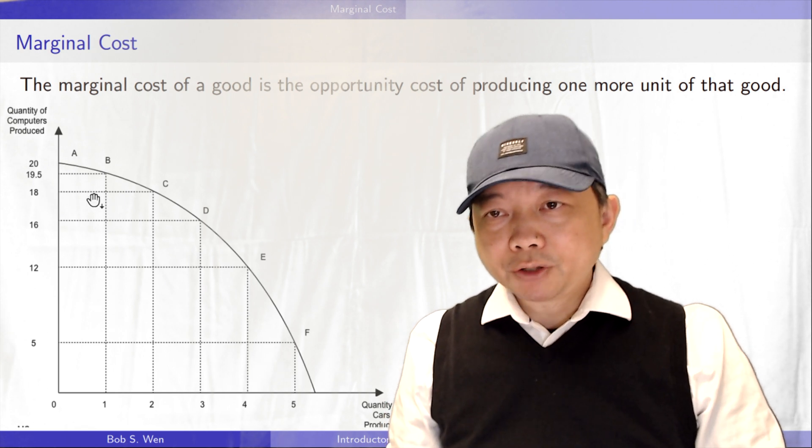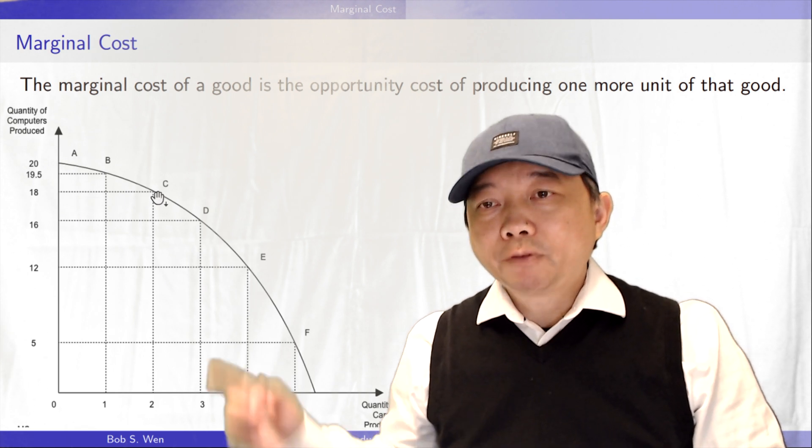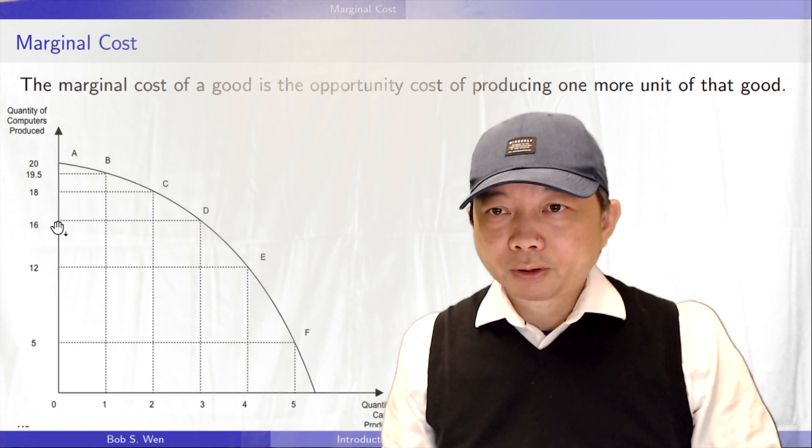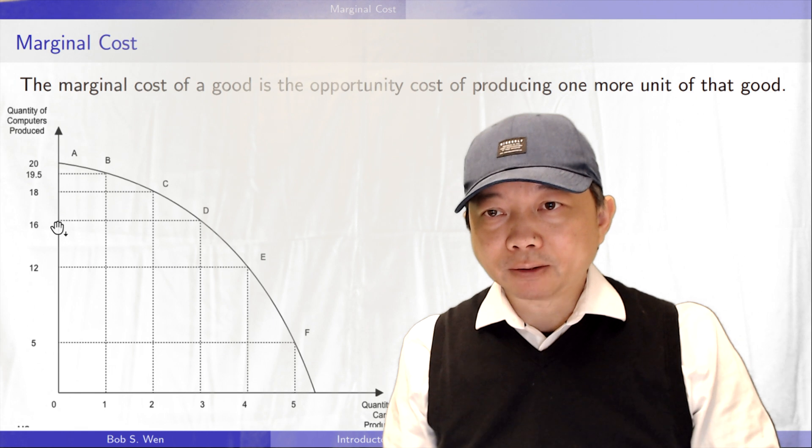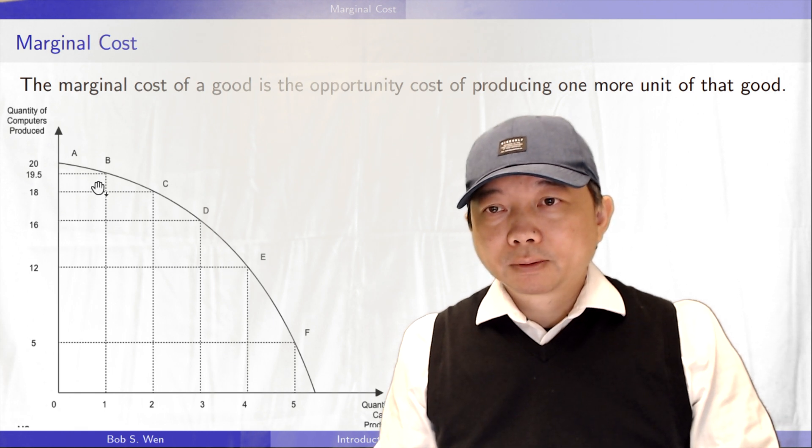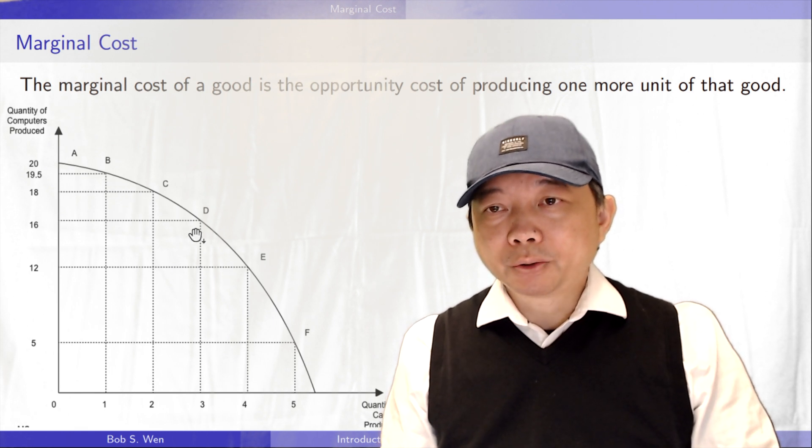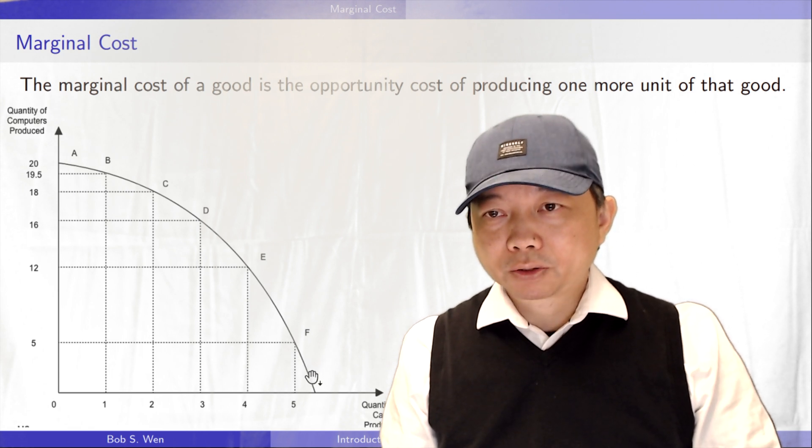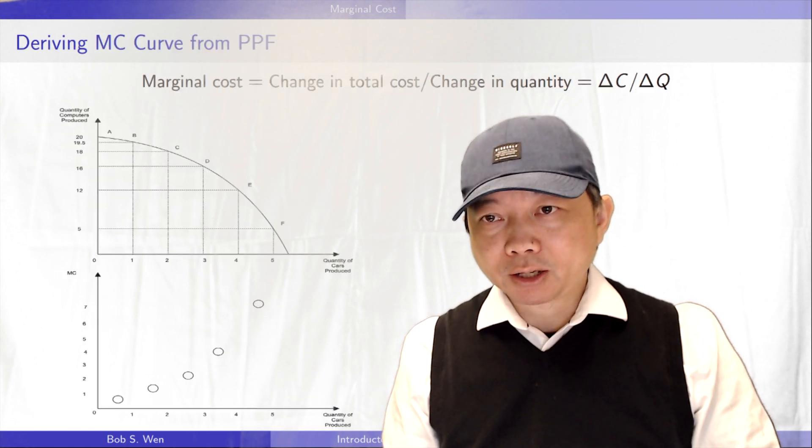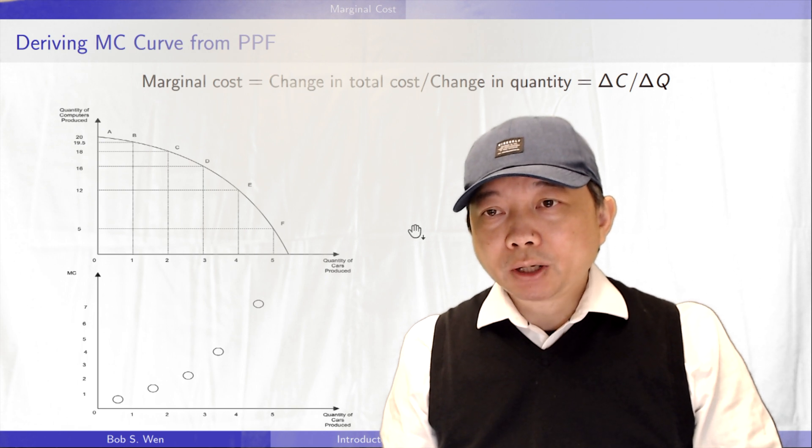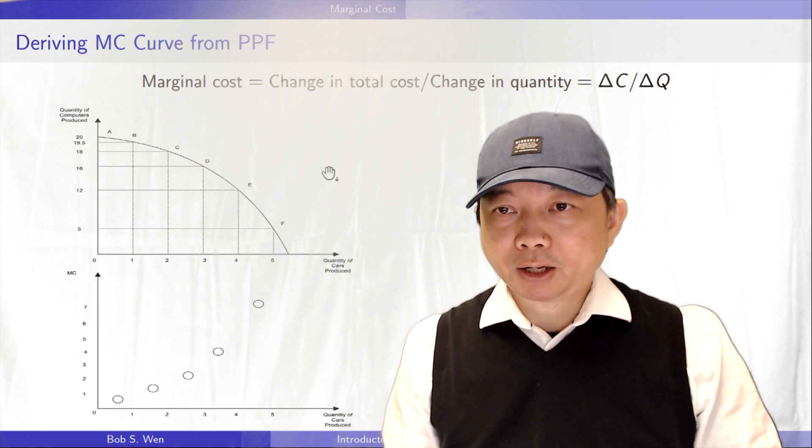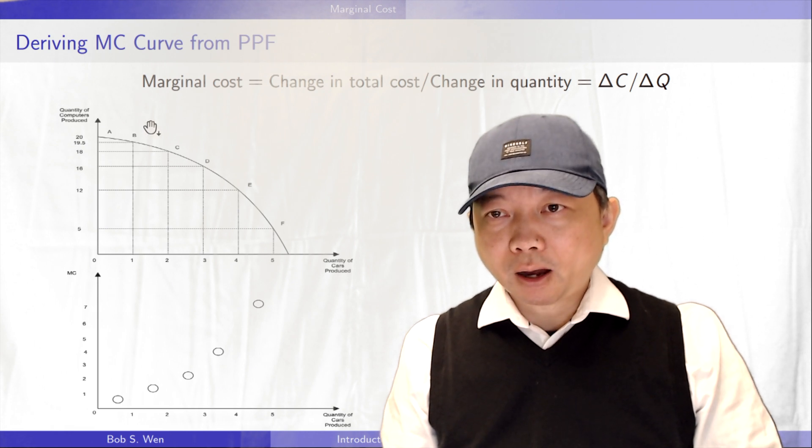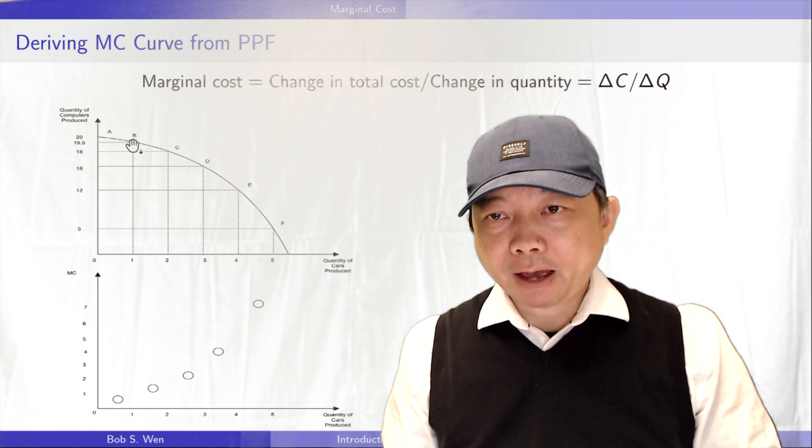As we continue to make one more car from C to D, we give up 2 units of computers from 18 to 16. The marginal cost is equal to the range of change, delta cost divided by delta quantity. That is the change in cost divided by the change in quantity. It is the absolute value of the slope of the PPF curve.